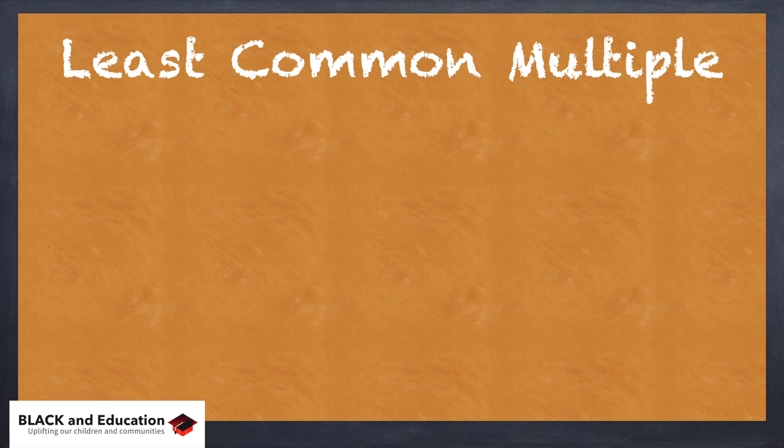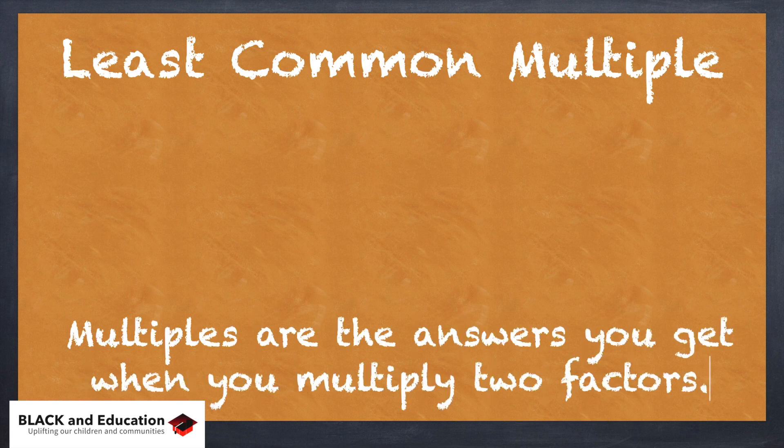So let's look at the least common multiple and another way of just listing it out and finding the least common multiple. We know that multiples are the answers to multiplication problems when you have two factors that you're multiplying together.